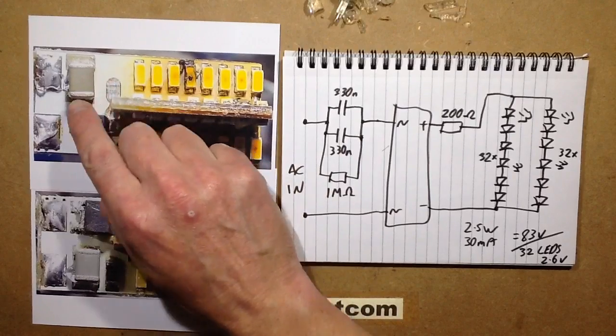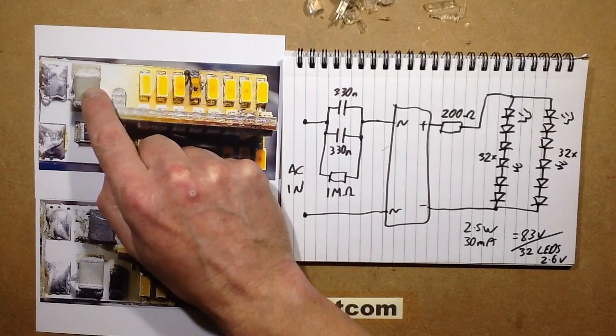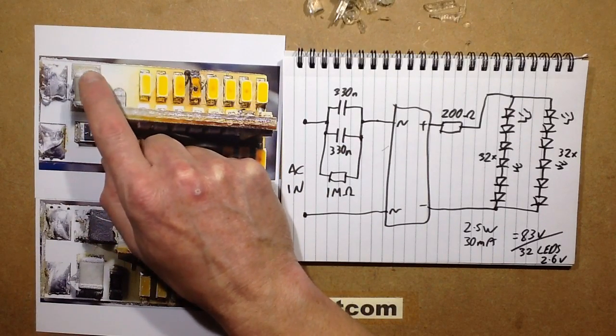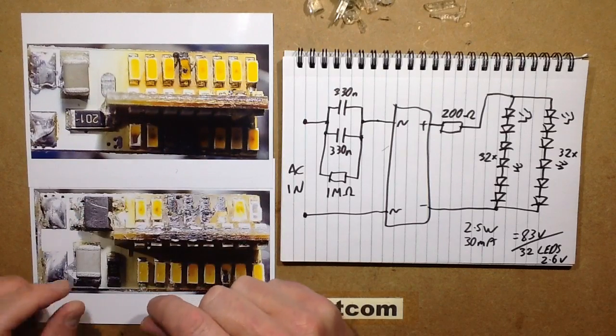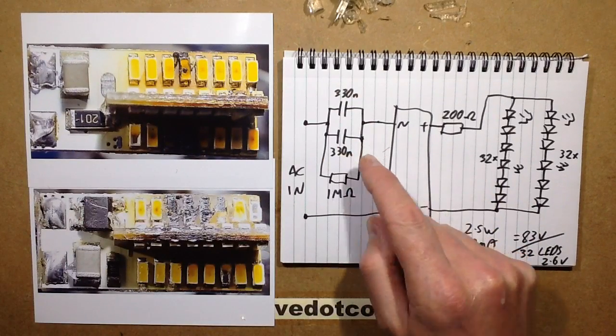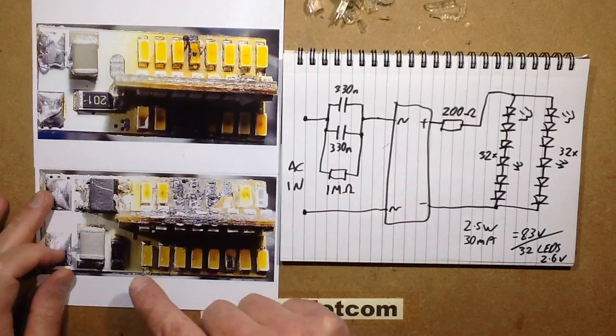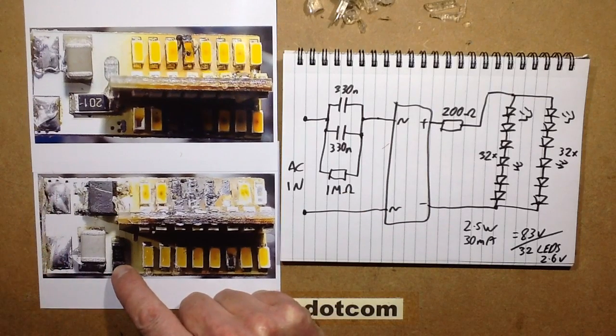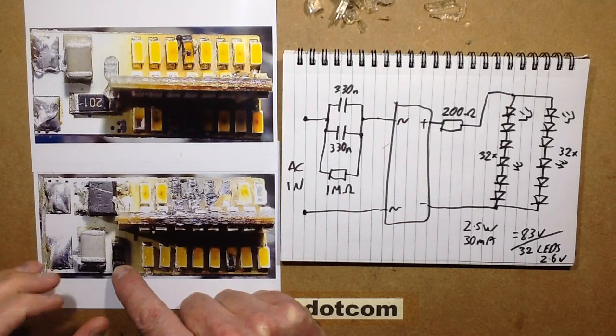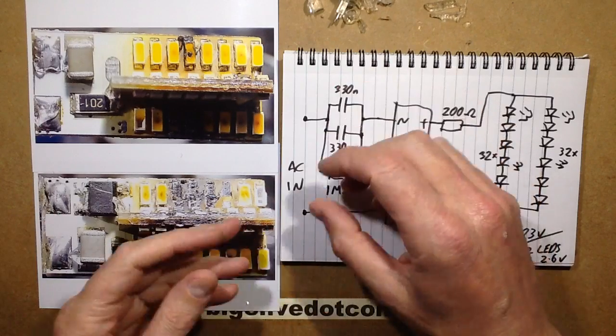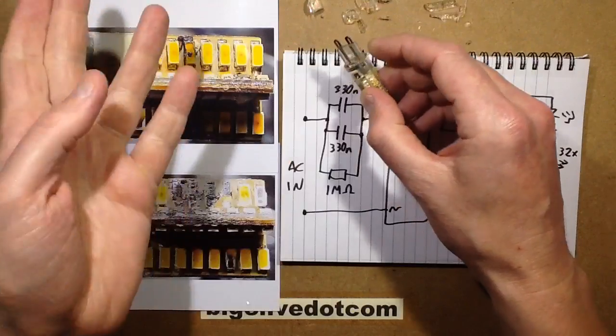These must be, I'm guessing, multi-layer ceramic capacitors just rated for quite a high voltage. I wonder how reliable they are. You've got the two dropper capacitors with a 1 megaohm discharge resistor, that's this little resistor down here, 105, 10 and 5 zeros, 1 megaohm. That's just designed so when you unplug it you don't get a zing off the pins.